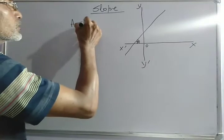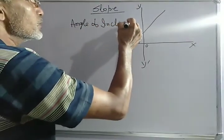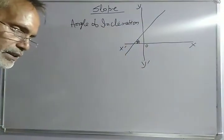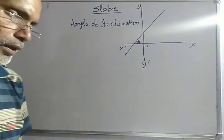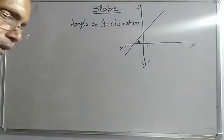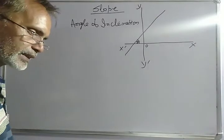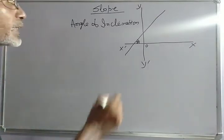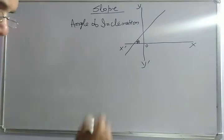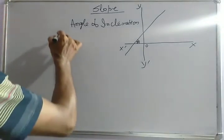So what is the angle of inclination? The inclination of a line, or angle of inclination, is the angle made by the part of the line above the x-axis with the positive direction of the x-axis. In this figure, this angle is theta.